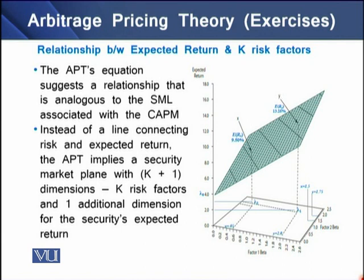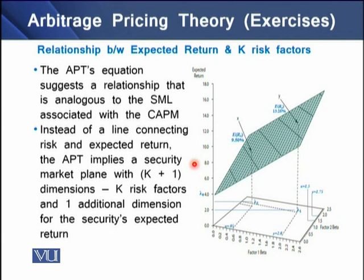The APT equation suggests a relationship analogous to the Security Market Line associated with CAPM. But instead of a line connecting risk and expected return, the APT implies a security market plane with K+1 dimensions — K risk factors plus one additional dimension for the security's expected return. On the right panel of the screen, we can see multiple dimensions: factor 2 beta, factor 1 beta, and expected return.